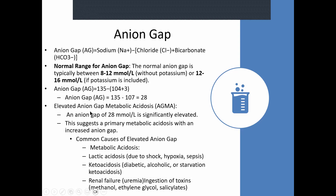In this case: sodium 135, chloride 104, bicarb 3. So 104 plus 3 is 107, and 135 minus 107 gives you 28 — far above the normal range. The most common causes of elevated anion gap metabolic acidosis include shock, hypoxia, sepsis, diabetes, alcohol, starvation, ketoacidosis, renal failure, uremia, and ingestion of toxins such as methanol, ethylene glycol, and salicylates.